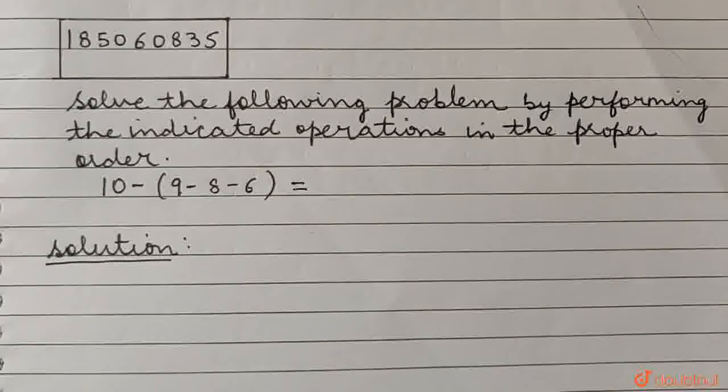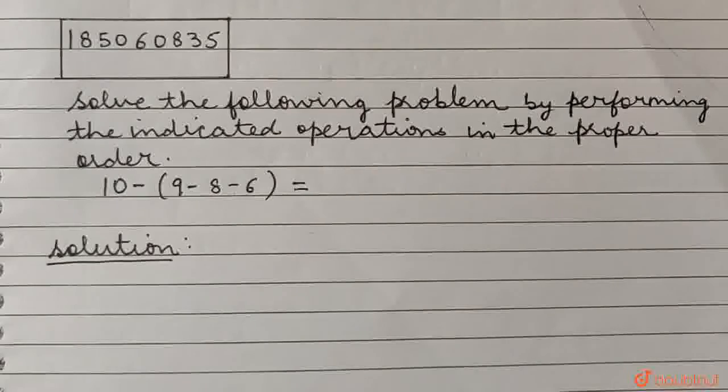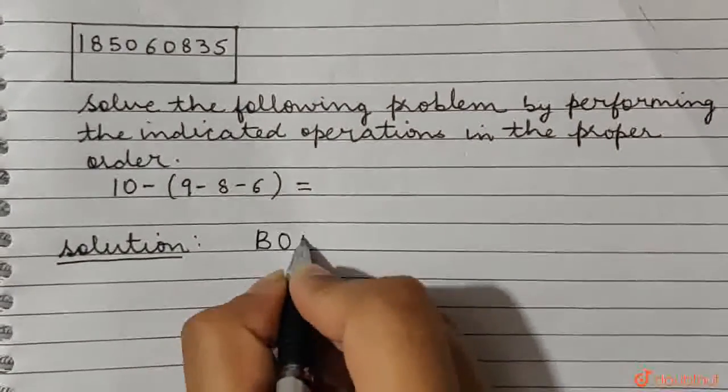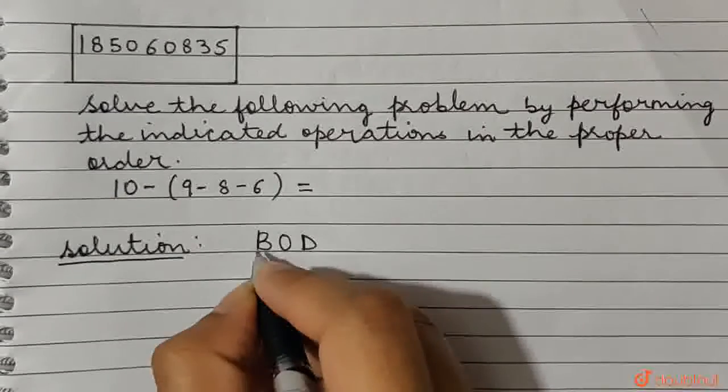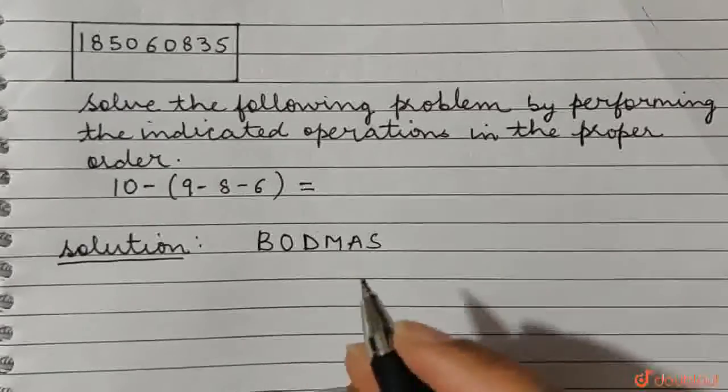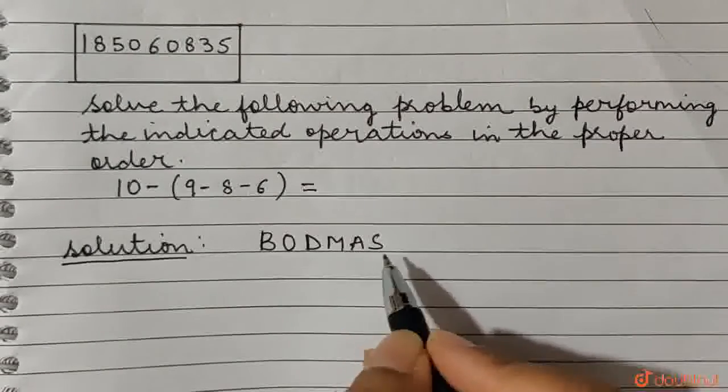For solving this question, we need to follow the BODMAS rule, which says that first we need to open up the brackets, then we need to divide, then multiply, add, and subtract.